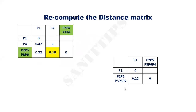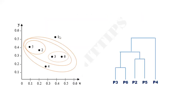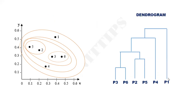Recompute the distance matrix. Now {P2, P5, P3, P6, P4} forms a single cluster, and the distance to P1 is 0.22. The smallest value is 0.22. Finally, we have only two clusters left, so we merge them together as a single cluster. This is the corresponding dendrogram. Since all data points are merged into a single cluster, we can stop the process, and this is our final dendrogram.